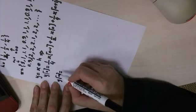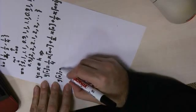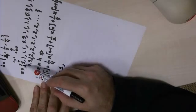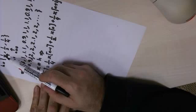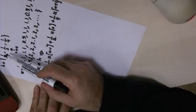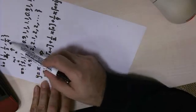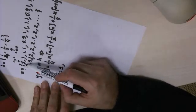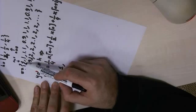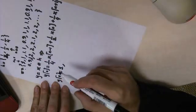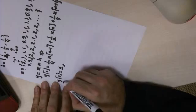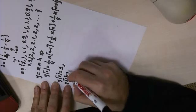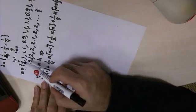So y[0] is simply equal to 1. You take these three samples, multiply them with the corresponding coefficients of the filter, and you get one. Then we move to the next value, which is y[1].